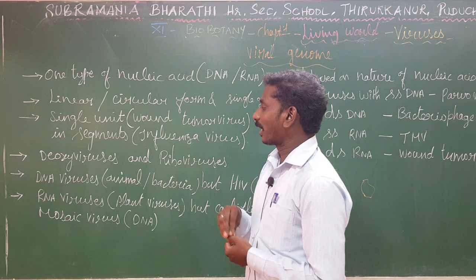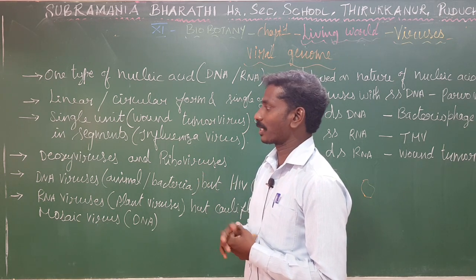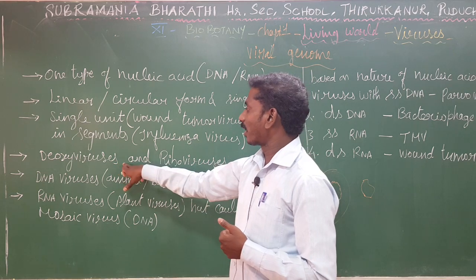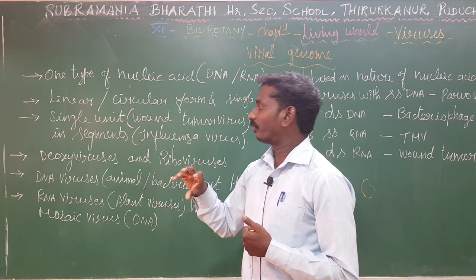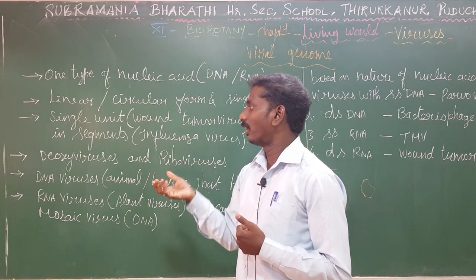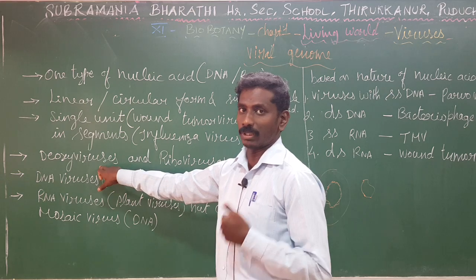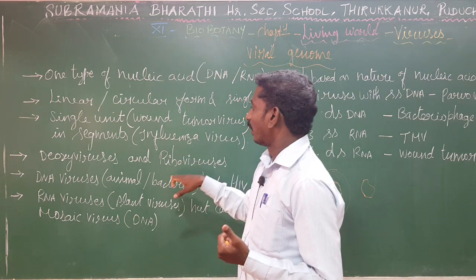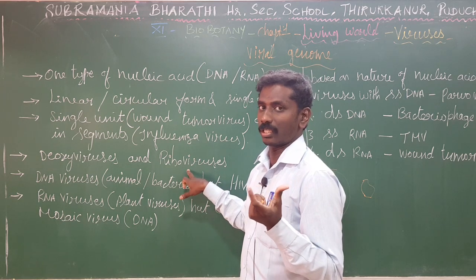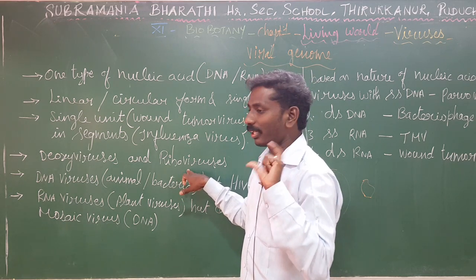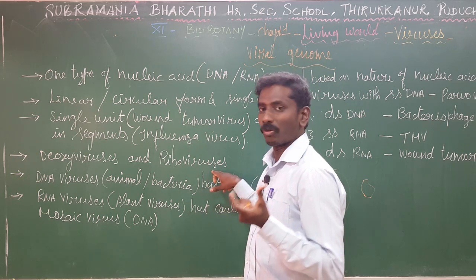Based on the virus nucleic acid, two types are classified: deoxyviruses and riboviruses. If the viruses consist of DNA as their nucleic acid, they are called deoxyviruses. If the viruses consist of RNA as their nucleic acid, they are called riboviruses.